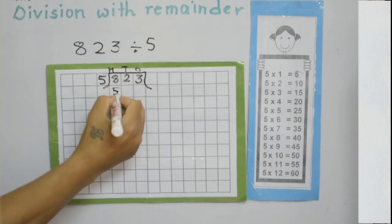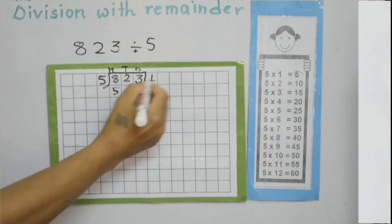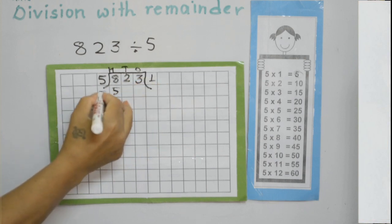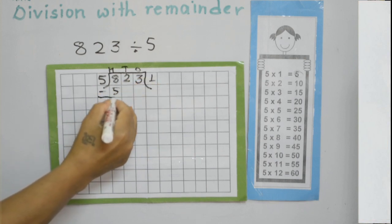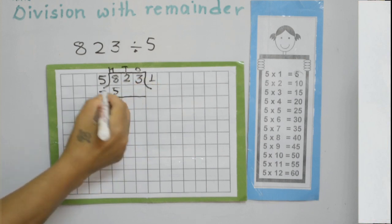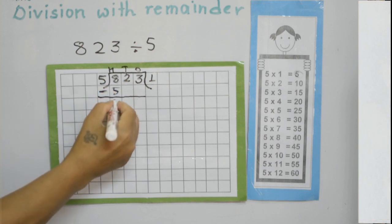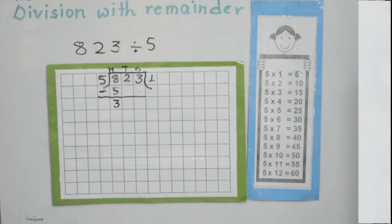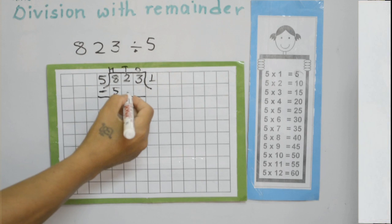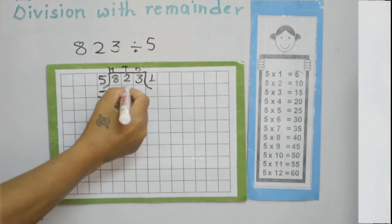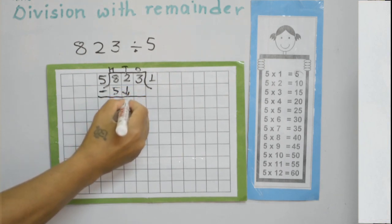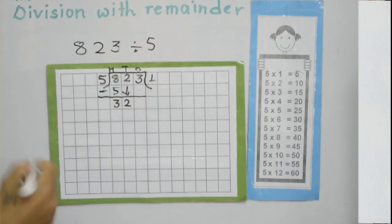5 comes from 5 times 1 is 5. Now the second step: we need to subtract. 8 minus 5 is 3. Now we bring this tens digit down — which is 2. Now we have a new number: 32.